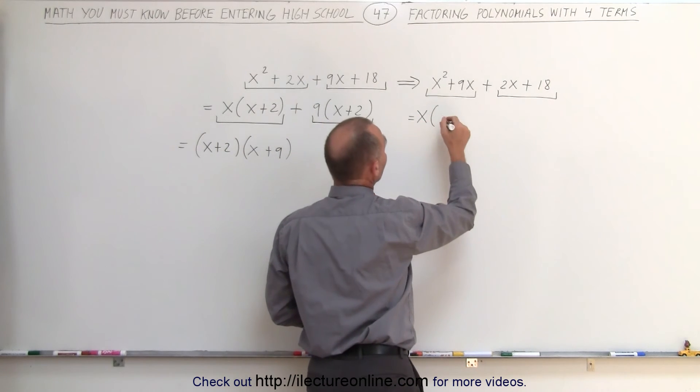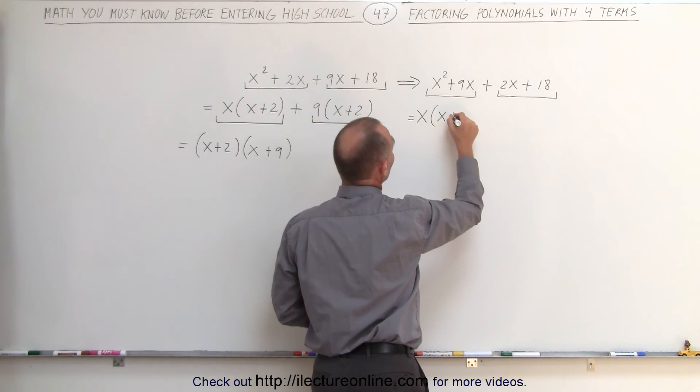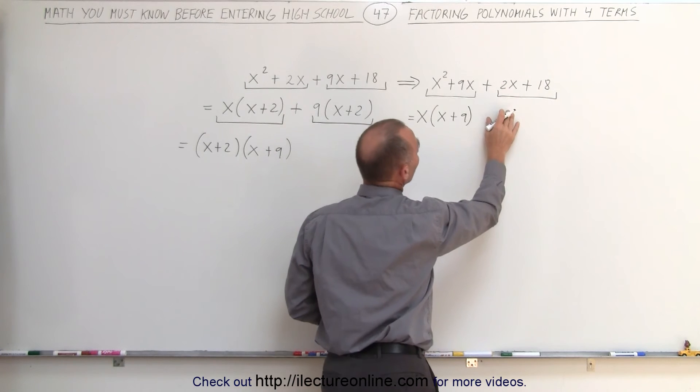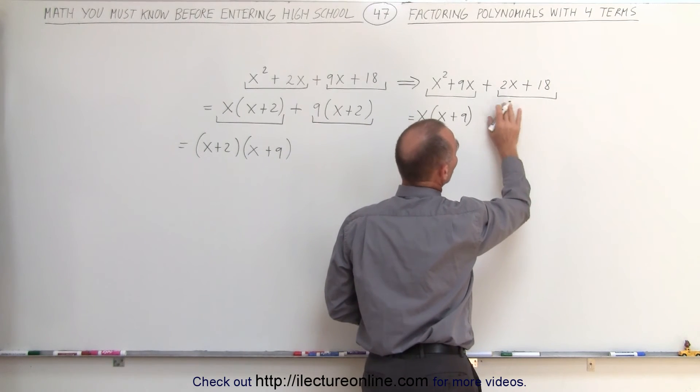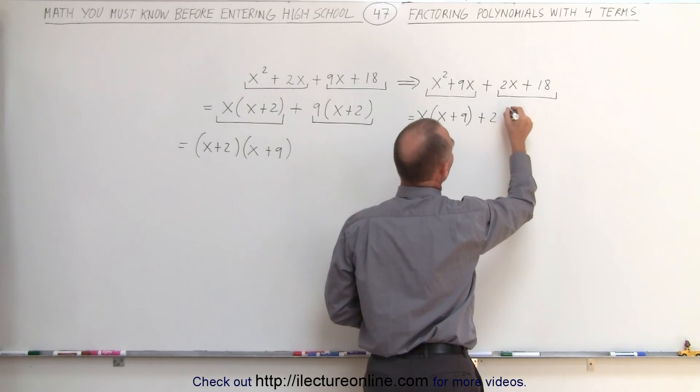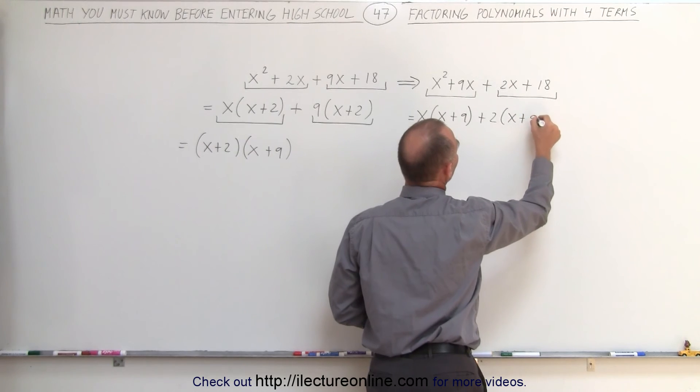So here we factor out an x so we get x plus 9 and here we're going to factor out the number 2 which is common. So plus 2 times x plus 9 is the remainder.